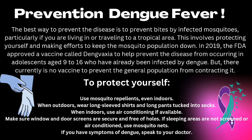Prevention regarding Dengue Fever: The best way to prevent the disease is to prevent bites by infected mosquitoes, particularly if you are living in or traveling to a tropical area. This involves protecting yourself and making efforts to keep the mosquito population down. In 2019, the FDA approved a vaccine called Dengvaxia to help prevent the disease in adolescents aged around 9–16 who have already been infected by Dengue. But there currently is no vaccine to prevent the general population from contracting it.